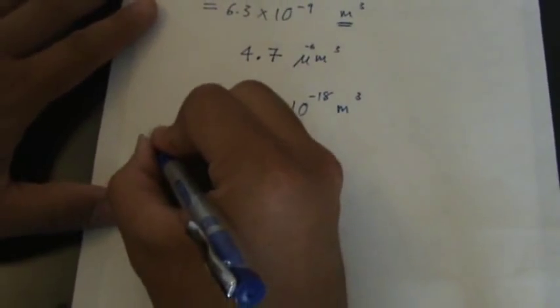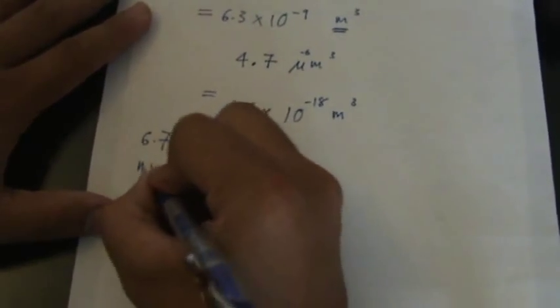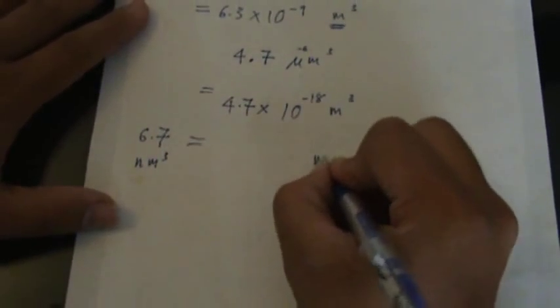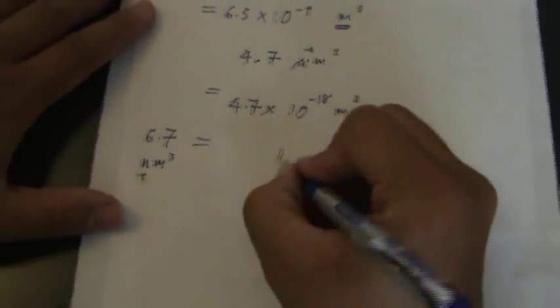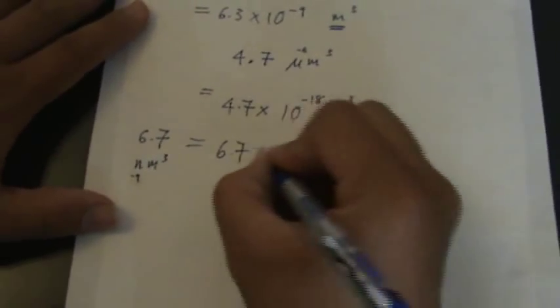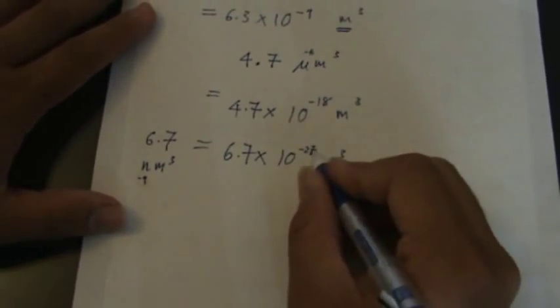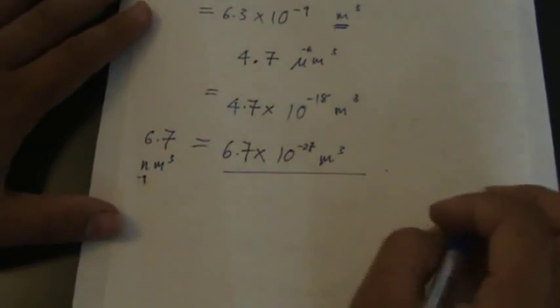Another one should be, let's try 6.7 nanometer cubed. I want to change to meter cubed. So nano itself is negative 9, so 3. So 10 negative 27. You have 6.7 times 10 power of negative 27. You have this answer.